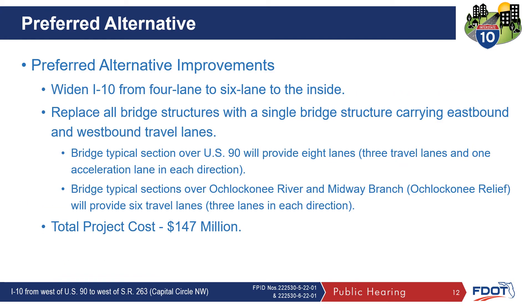The preferred alternative improvements include widening I-10 from 4-lane to 6-lane to the inside, replacing all bridge structures with a single bridge structure carrying eastbound and westbound travel lanes. The bridge typical section over U.S. 90 will provide 8 lanes — 3 travel lanes and 1 acceleration lane in each direction. The bridge typical sections over O'Clockney River and Midway Branch, O'Clockney Relief, will provide 6 travel lanes, 3 lanes in each direction, for a total project cost of $147 million dollars.